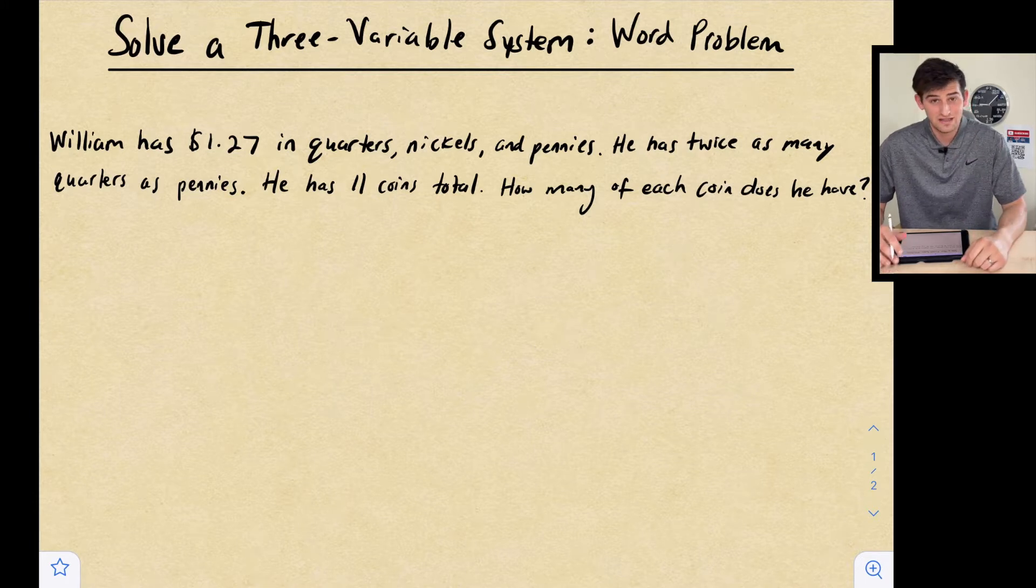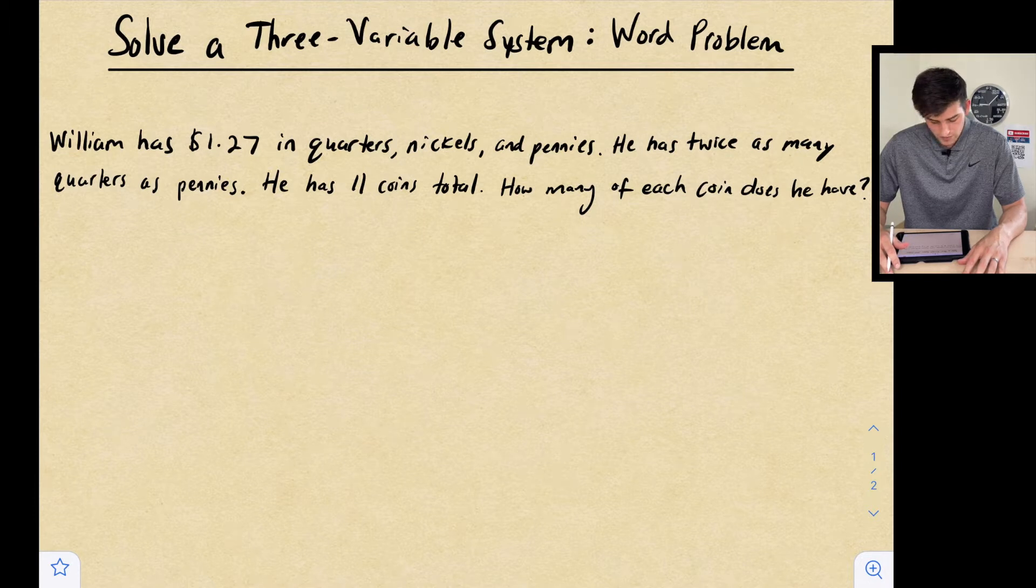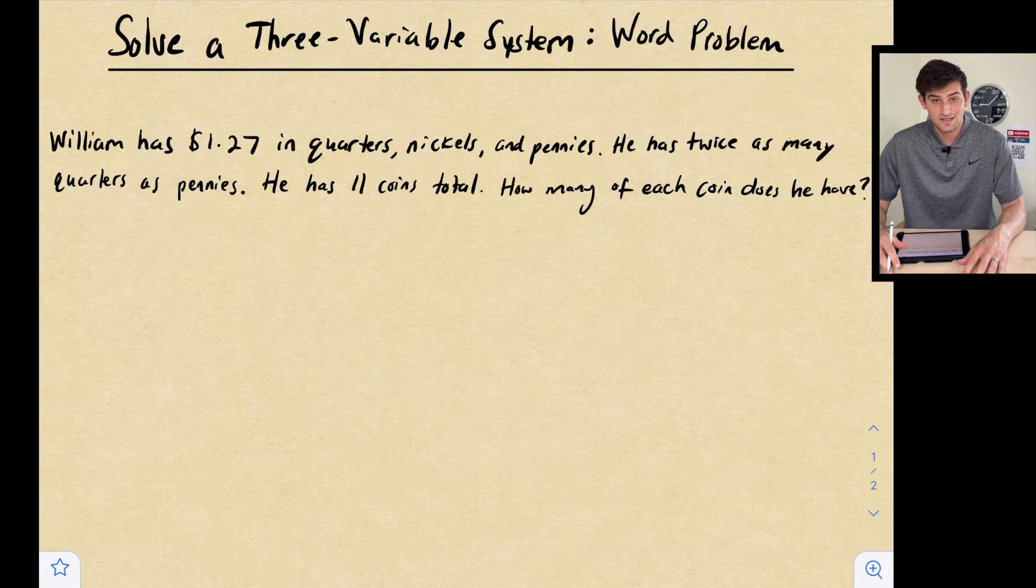Let's look at our problem. It says, William has $1.27 in quarters, nickels, and pennies. He has twice as many quarters as pennies. He has 11 coins total. How many of each coin does he have?